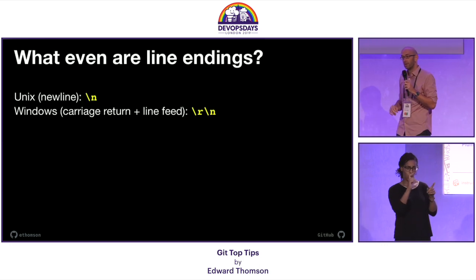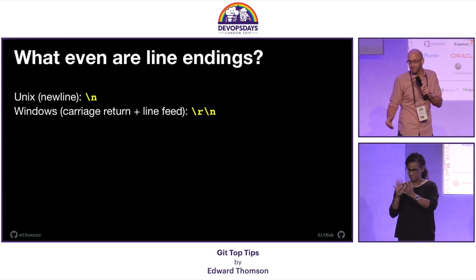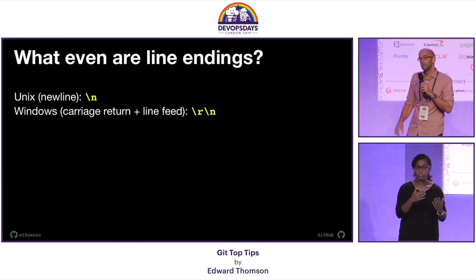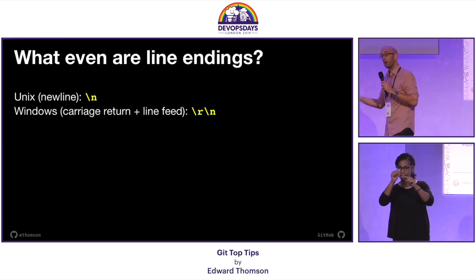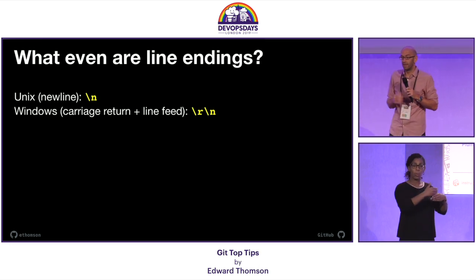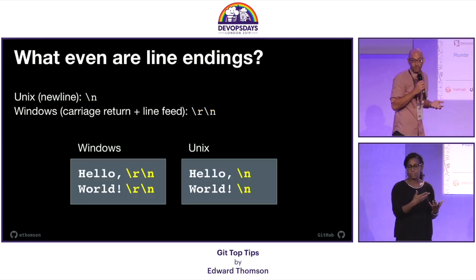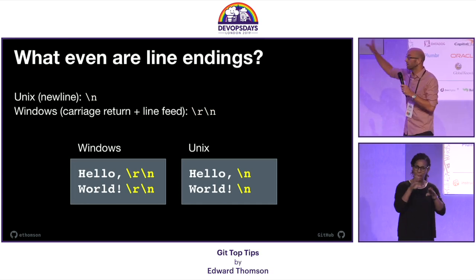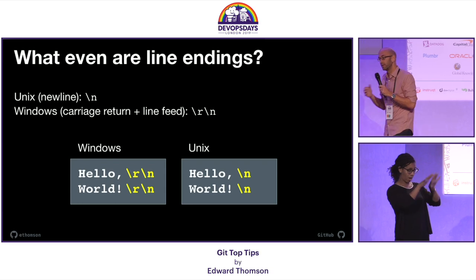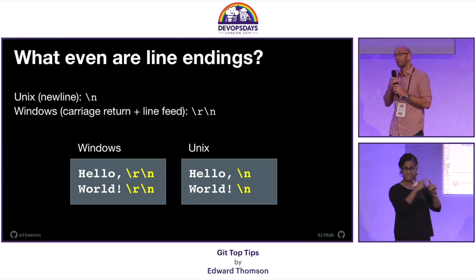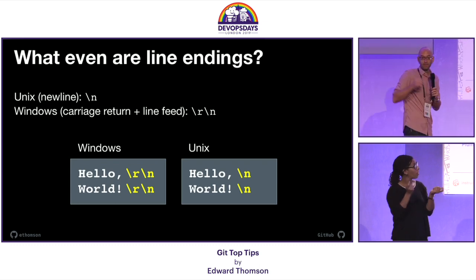Let's rewind just a second. What does it mean to be a line ending? Well, if you're not familiar with this, on Unix systems you use one character to say go to the next line in a text file. On Windows, you have two characters — a carriage return and a line feed. So this is some historical baggage we've just got to deal with. But fundamentally, when you look at a text file visually, side by side on a Unix machine and a Windows machine, even though they appear the same, they are not, because they've got these different control characters for the end of lines.